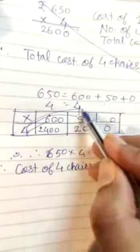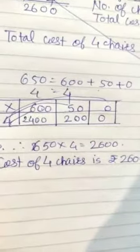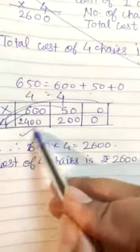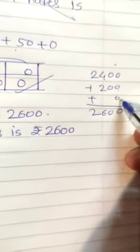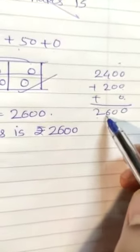Next, now multiply this. 4 zeros are 0. Now add these 3. 2400 plus 200 plus 0. That will give you answer 2600.